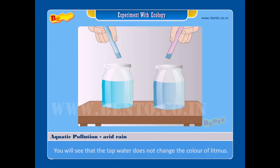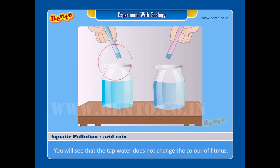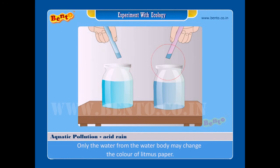You will see that the tap water does not change the color of litmus. Only the water from the water body may change the color of litmus paper.